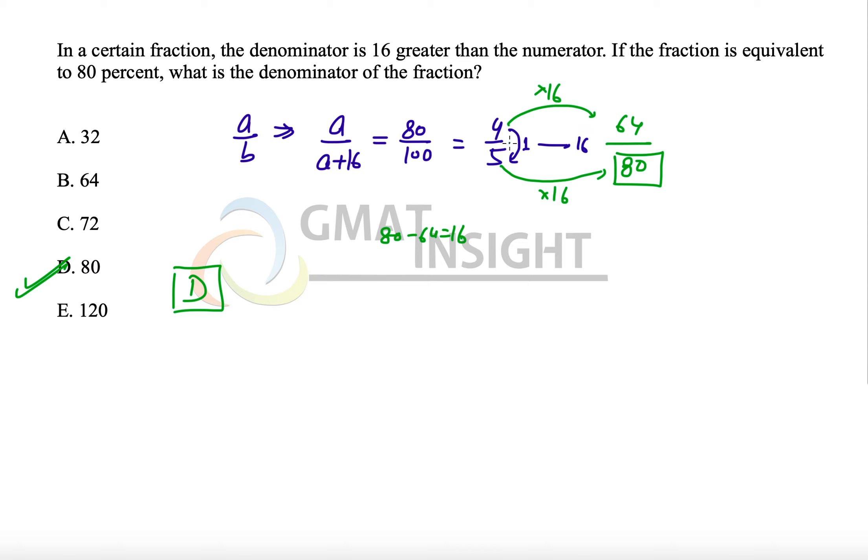The moment we viewed that the difference here between numerator and denominator is 1 while the difference that we want is 16, so we multiplied both numerator and denominator with 16 so that the difference also gets multiplied by 16 and we get the desired outcome.